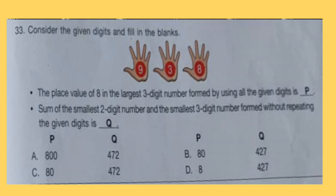Question 33: Consider the given digits and fill in the blanks. The place value of 8 in the largest 3 digit number formed by using all the given digits is P. Sum of the smallest 2 digit number and the smallest 3 digit number formed without repeating the digits is Q.